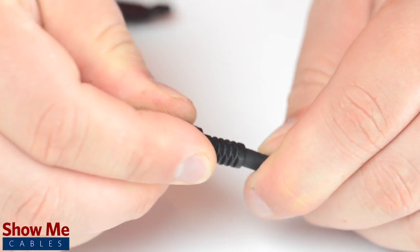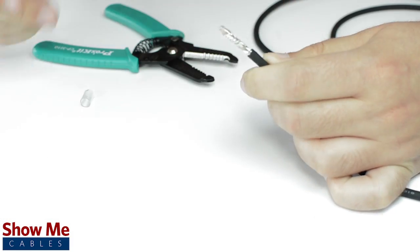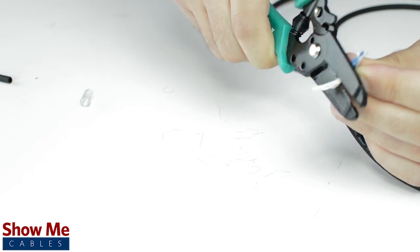Unscrew the strain relief and slide it onto the audio cable. Using a cable stripper, strip back the cable jacket. Then twist the shield together. Cut off any additional filler material.